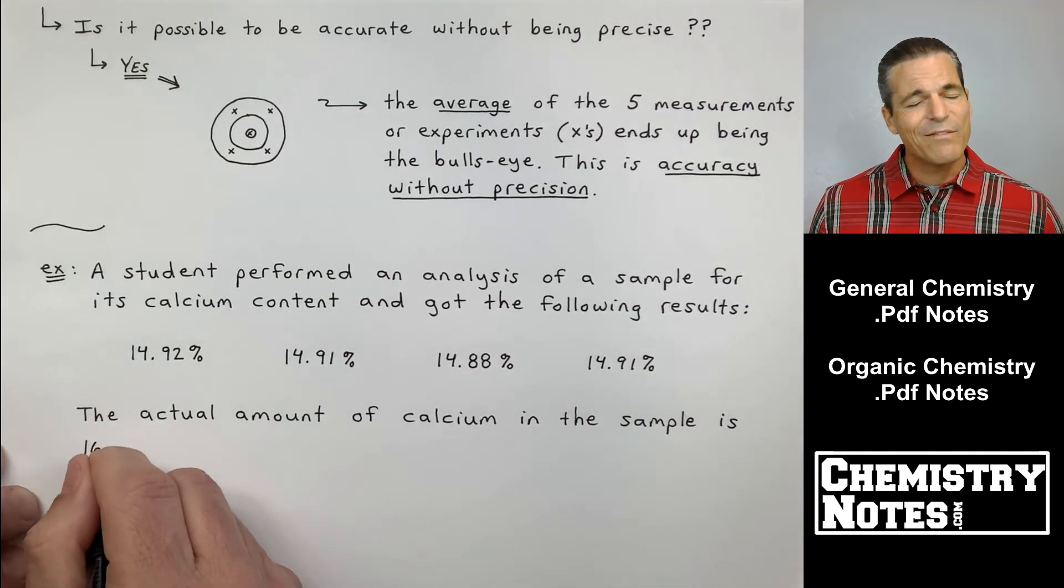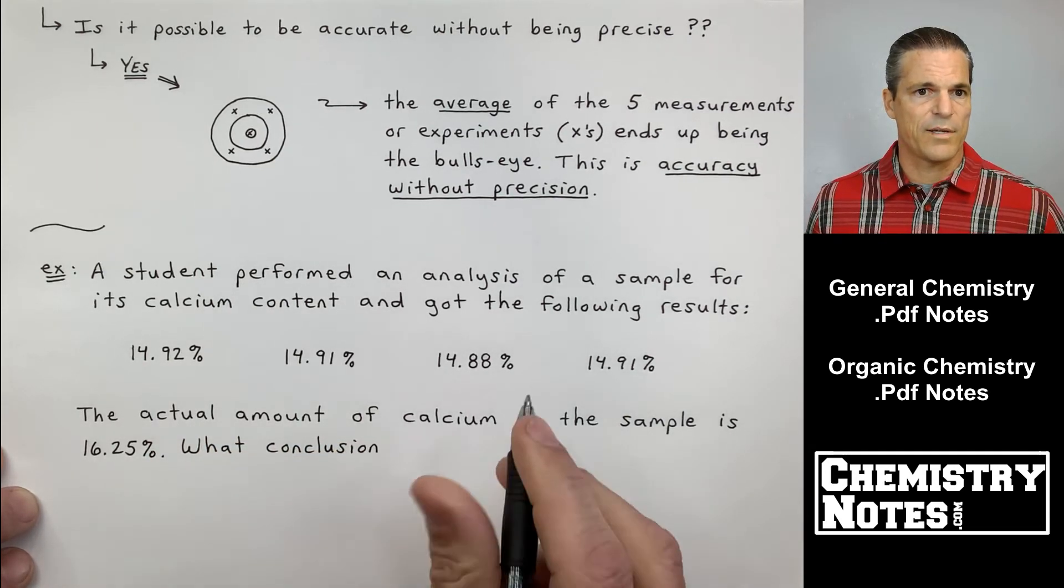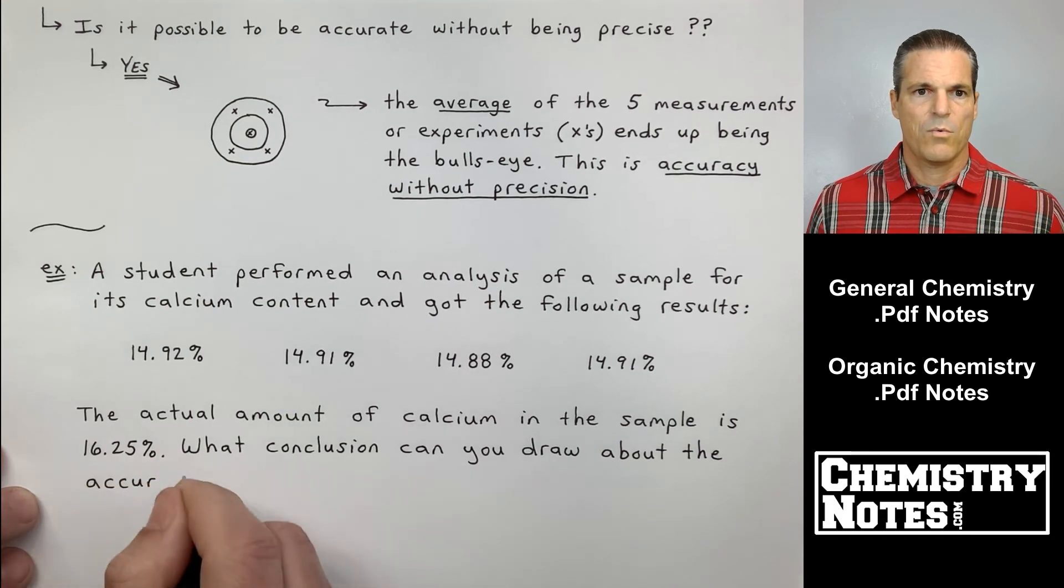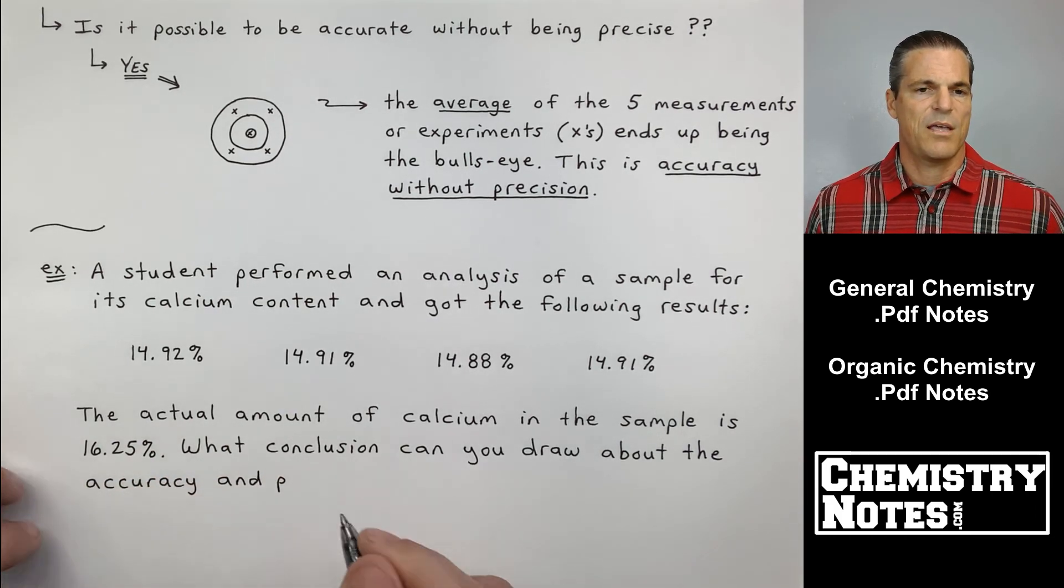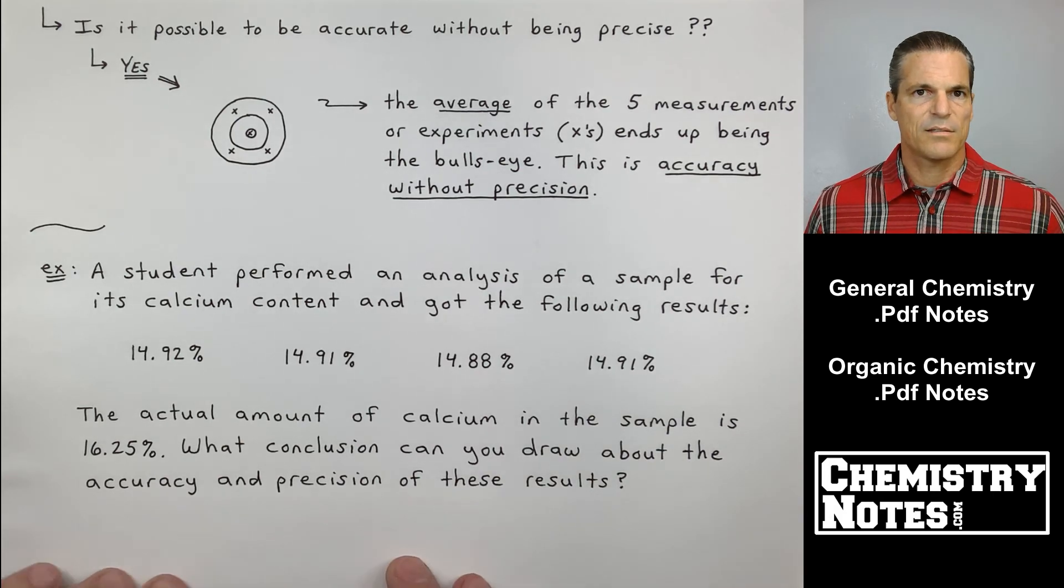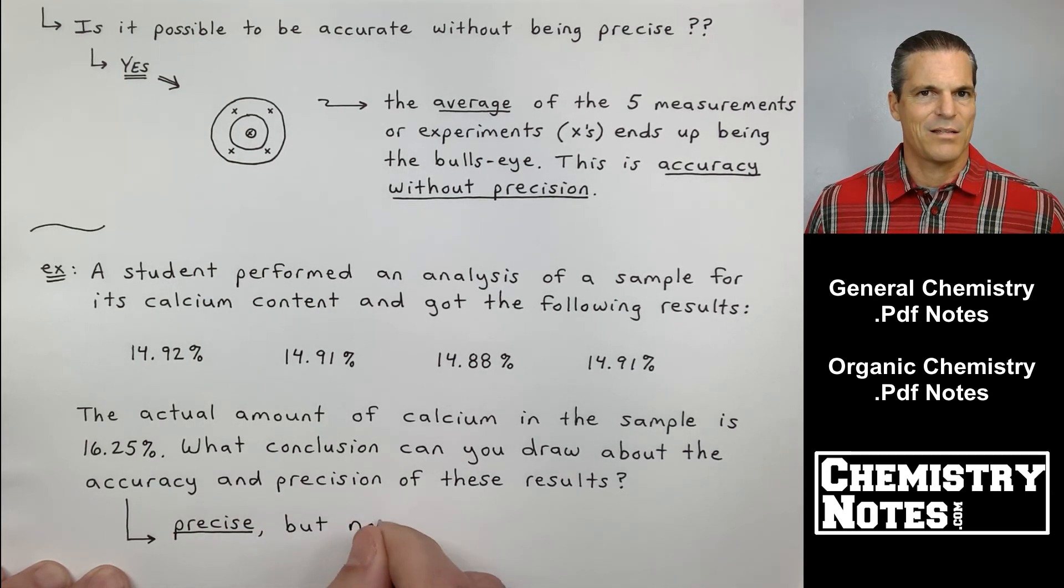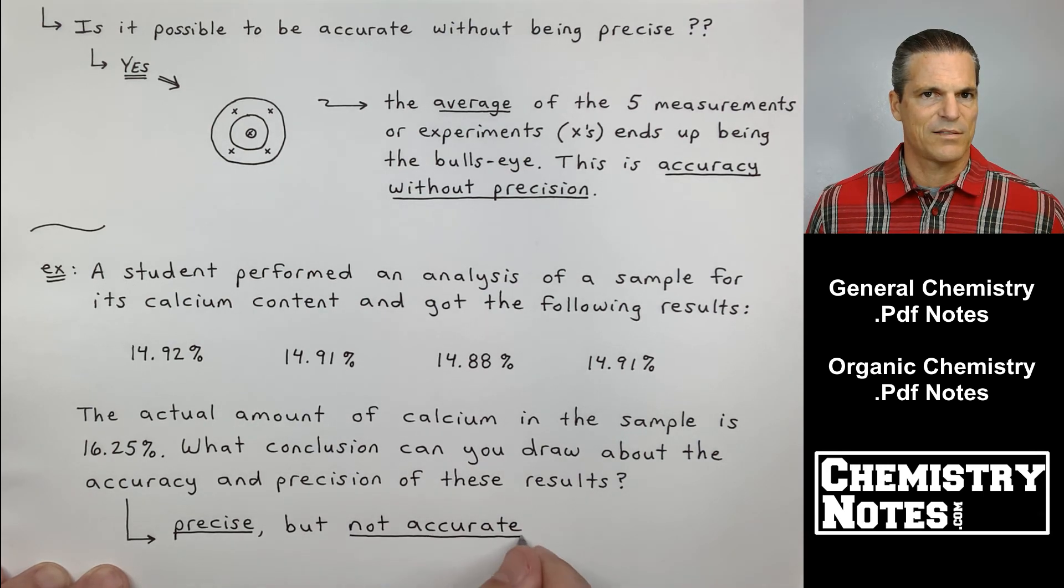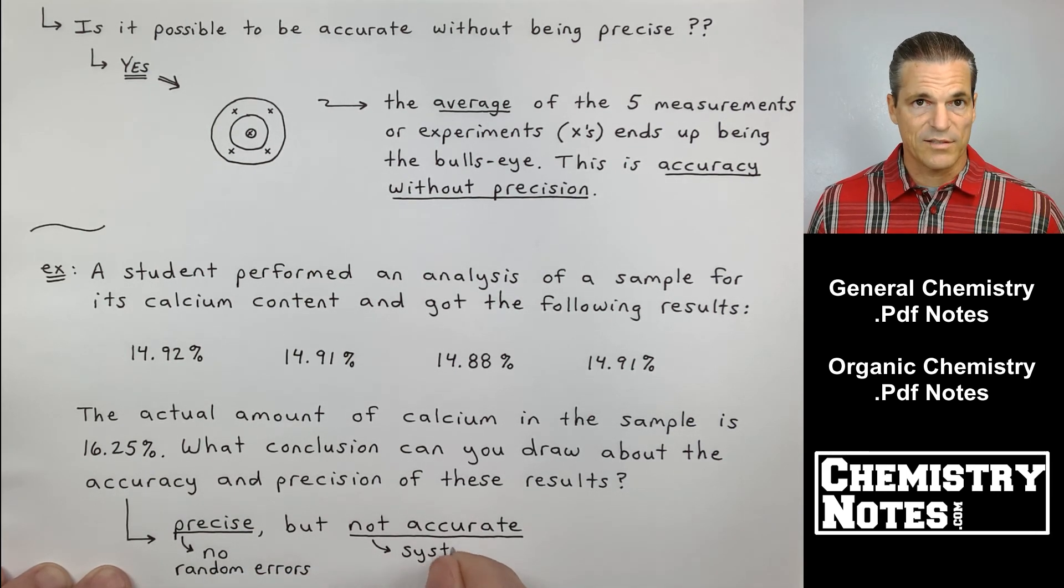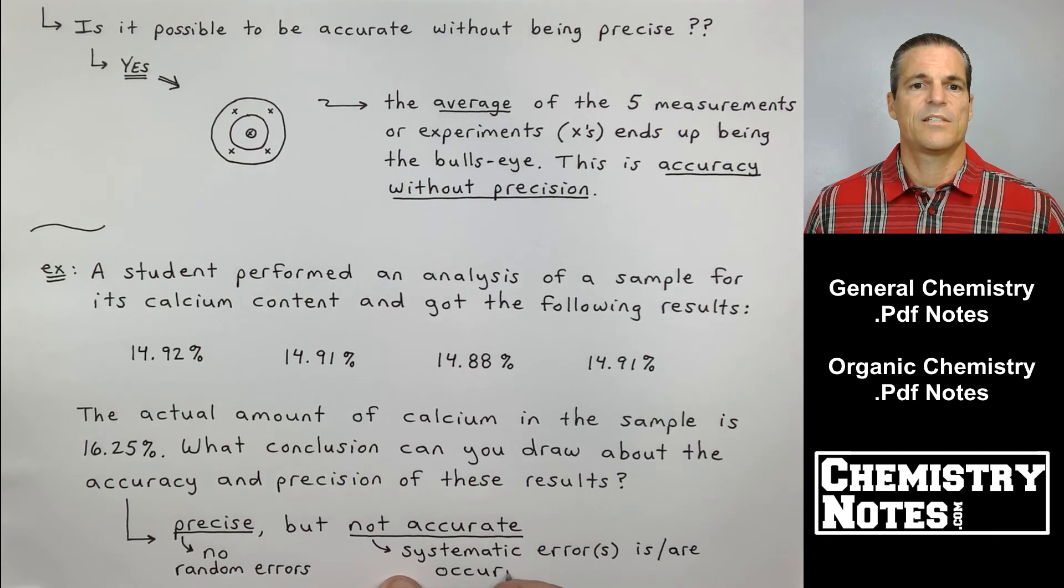So just by eyeballing that, we can kind of get an idea if this is precise or not, but we can't eyeball if he's accurate. To be accurate, you have to know what the true value is. The actual amount of calcium in the sample is 16.25%. What conclusion can you draw about the accuracy and precision? Well, that row of results, all starting with 14, high 14s, he's precise, so he's not making any human error. There's no random errors here. So he's precise, but he's not accurate. He's not getting anywhere near 16.25% calcium. So something is wrong with the process. Something is wrong with the way he's doing these experiments every single time. So we have systematic errors occurring.